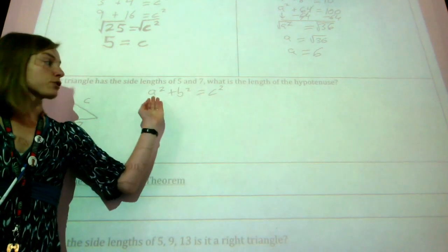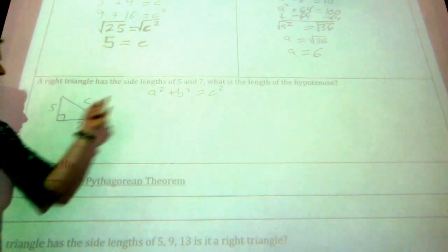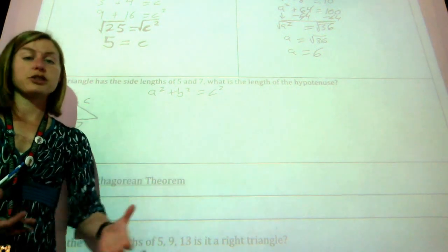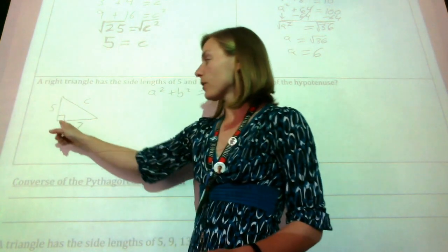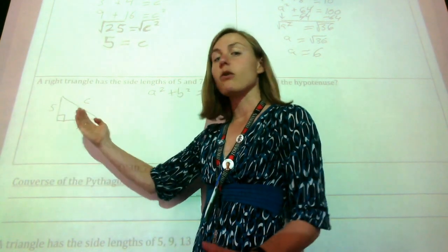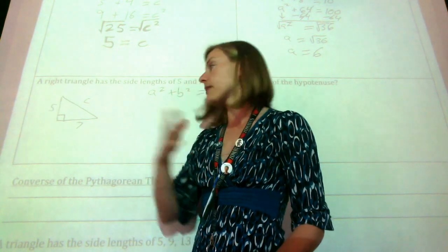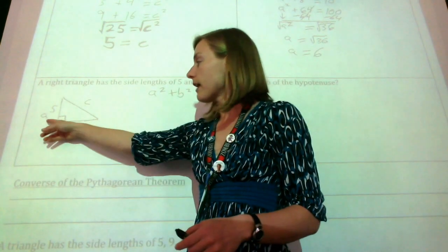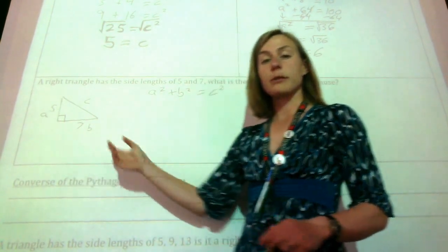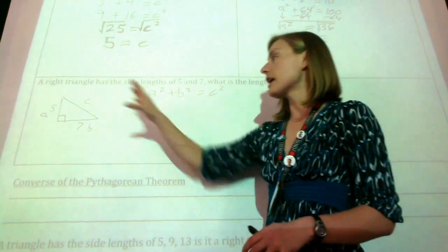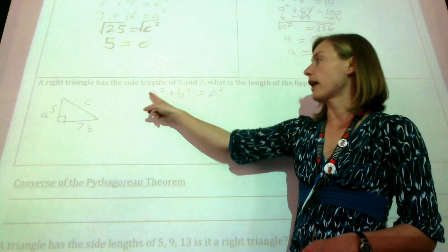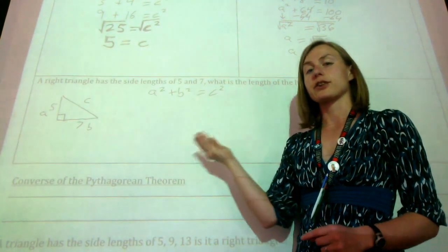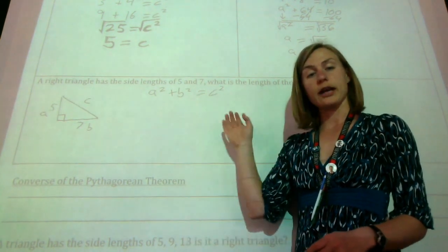We start by writing down our formula, then take the numbers and plug them in. We need to decide which side length is a and which is b. I like making the smaller side a, so I've decided 5 is a and 7 is b — but they can be switched. Go ahead and take those numbers, plug them in where they go: 5 and 7 squared, then add them together and square root to find what c is.